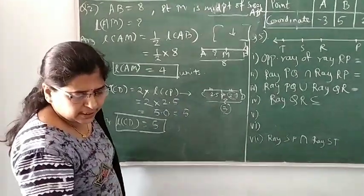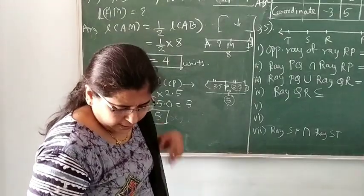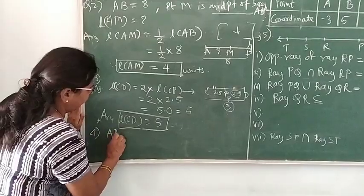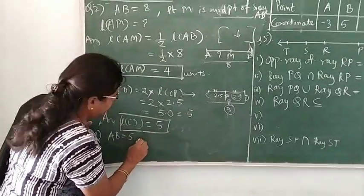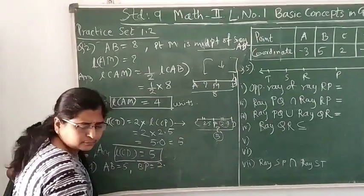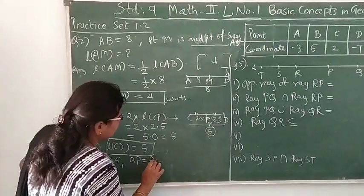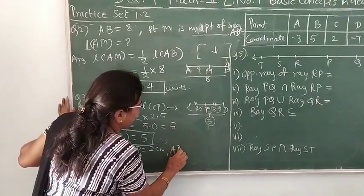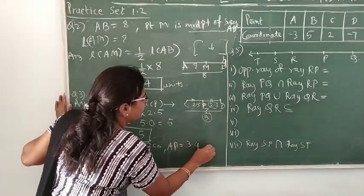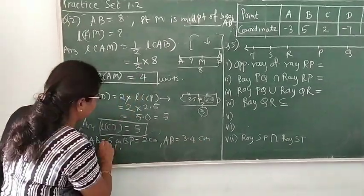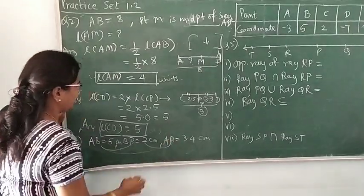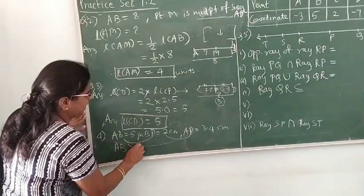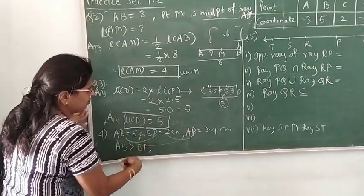One more simple question in this series, question number 4: if length AB is 5, BP is 2, and AP is 3.4, you have to compare the segments. What are the three segments given? AB is 5 centimeters, BP is 2 centimeters, and AP is 3.4 centimeters. Now you have to compare. You can take these pairs and compare. If AB, you can see 5 is bigger than 2, then you can write AB is bigger than BP. Like this you can write your answer.